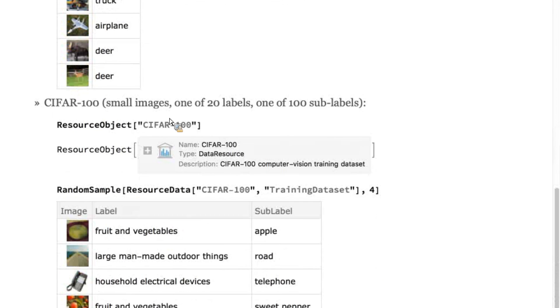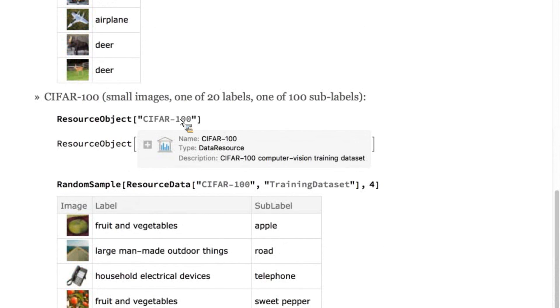The third is a related dataset called CIFAR100, a set of small images showing objects. It has two labels for each image. Learning both labels at once is called multitask learning. You can find examples using all of these datasets in the marketing pages and the documentation of NetTrain under applications.